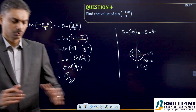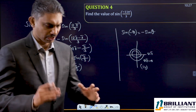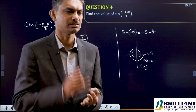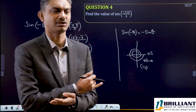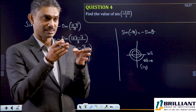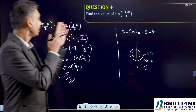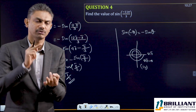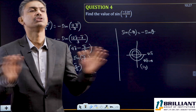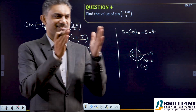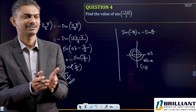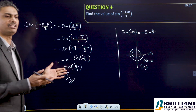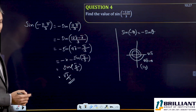So we covered two sine questions. Similarly you can work with cos, tan, cosec, and so on. For any angle — whether it is π/3, π/4, π/6, or anything else — reduce it, check the quadrant, and decide whether it is plus or minus.